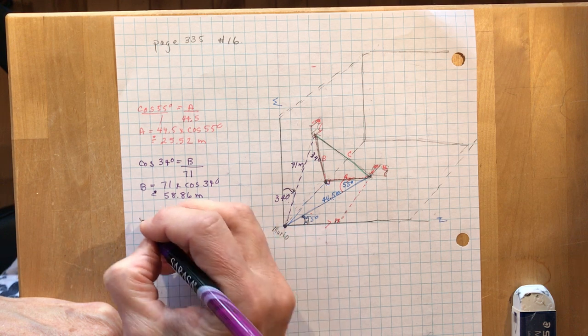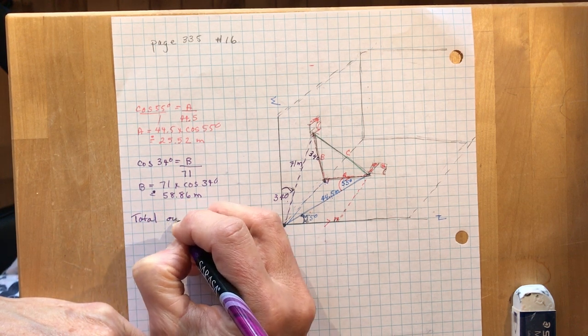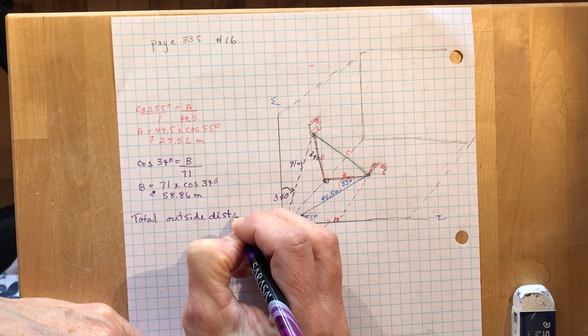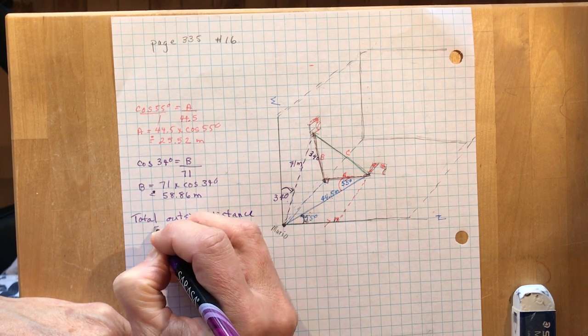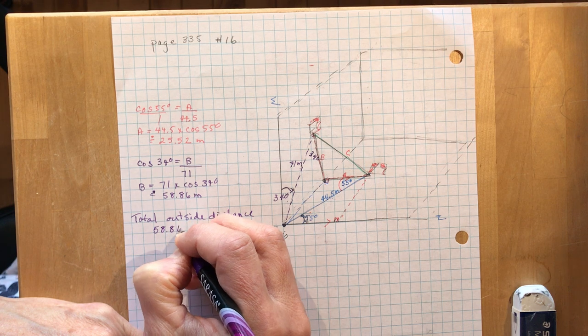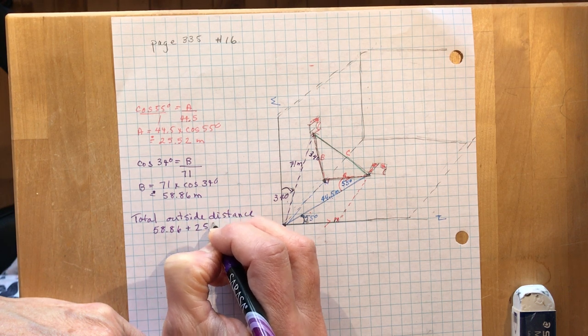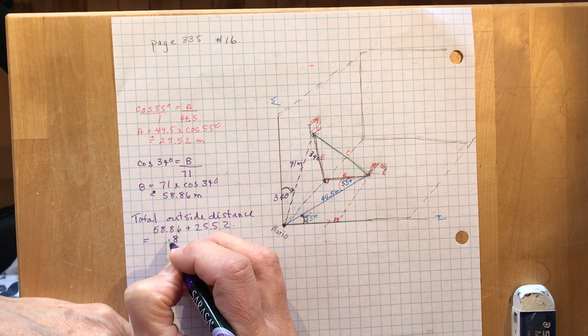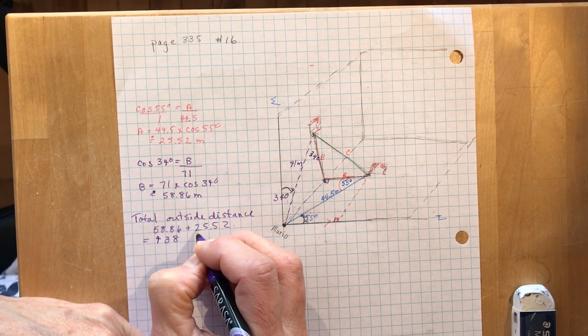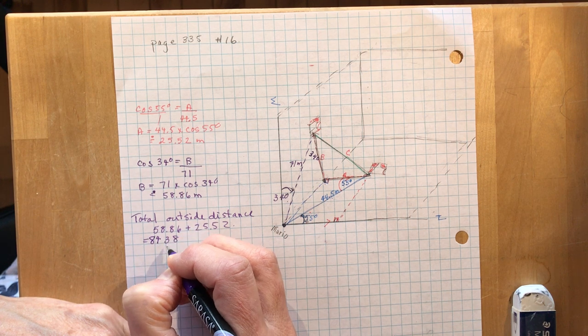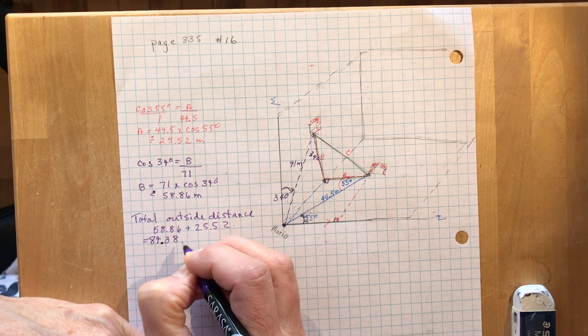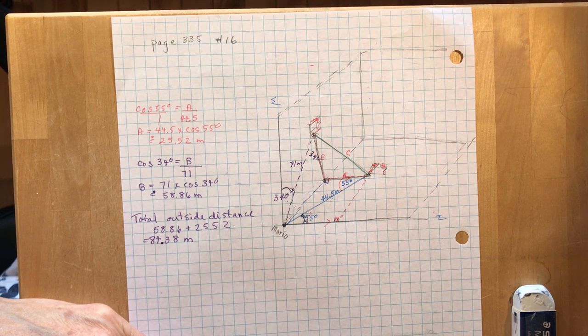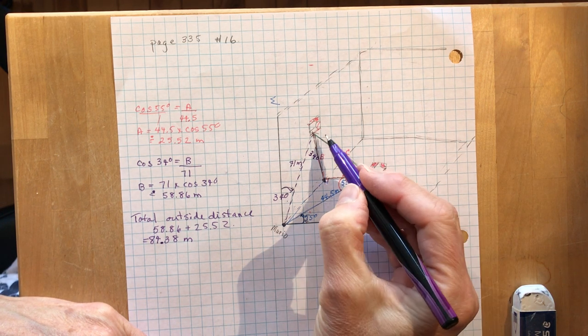So I have total outside distance will be 58.86 plus 25.52, and that's going to be 2 and 6 and 8, 5 and 8 are 13, carry the 1, 16, 8 is 14, carry the 1, 3 and 5 is 84.38 meters.